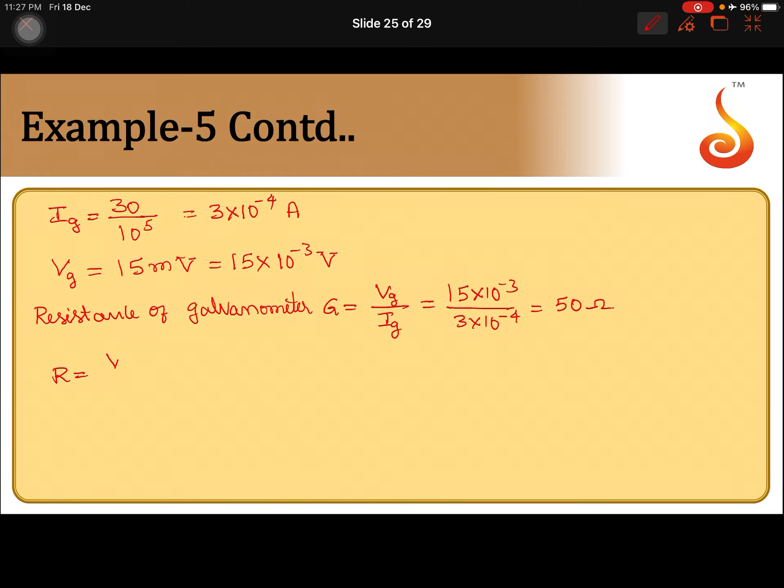So, what is R? R is equal to V by Ig minus G, that is 3 divided by 3 into 10 power minus 4, minus G is 50, that is equal to 10,000 minus 50, 9950 ohm.